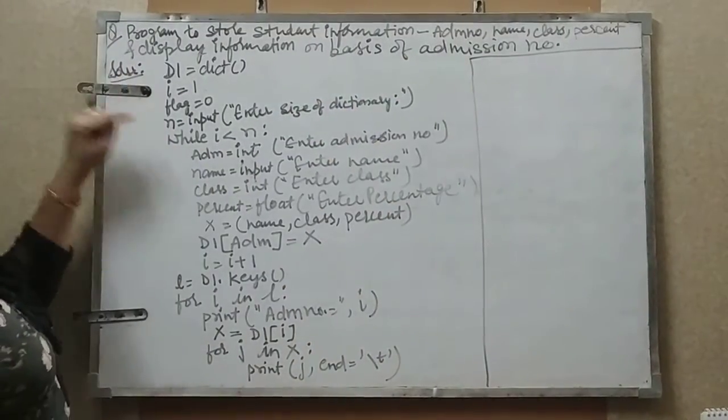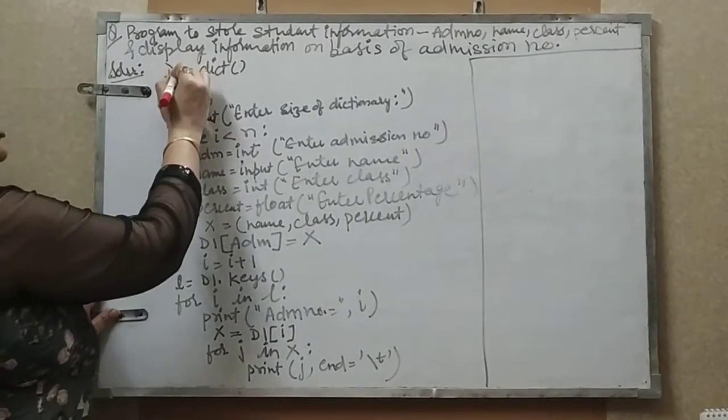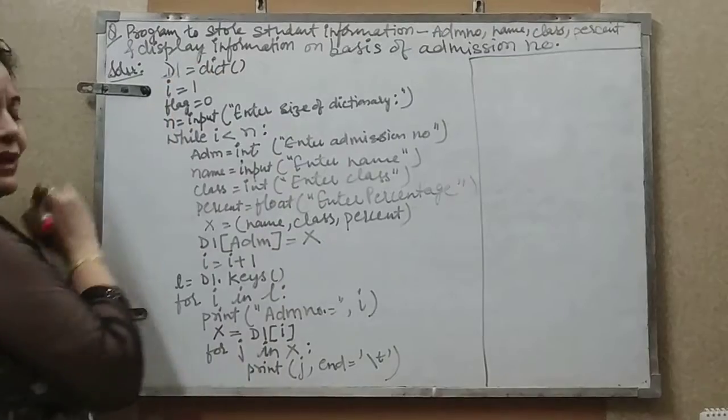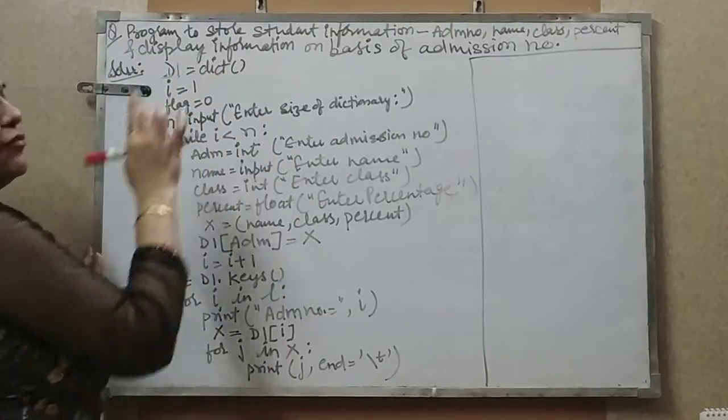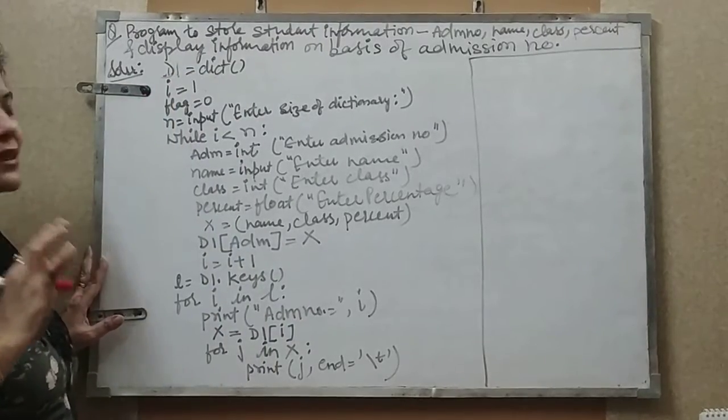For example, I will start my solution by taking D1 as a variable, as a dictionary, which is equal to an empty dictionary using the DICT function. This means an empty dictionary will be created in memory.